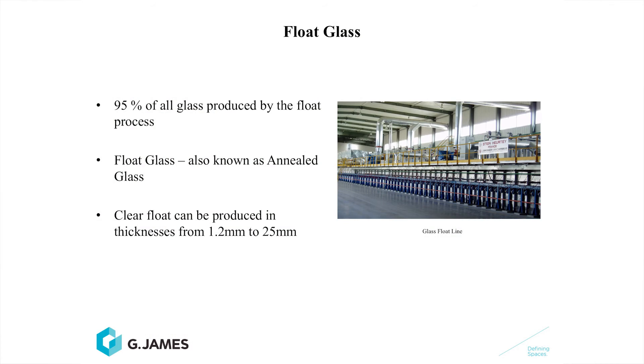Little cogs on the side of the ribbon of glass control the thickness, making it in a range from 1.2mm to 25mm. The glass is then cooled in a controlled manner in the annealing lehr, then cut and stored for distribution. 95% of all the world's glass is produced by the float process. Float glass is known as annealed glass and can be produced in thicknesses from 1.2mm to 25mm.